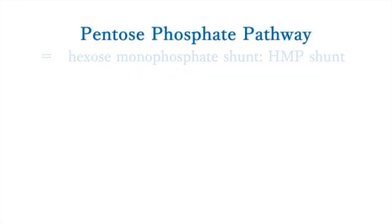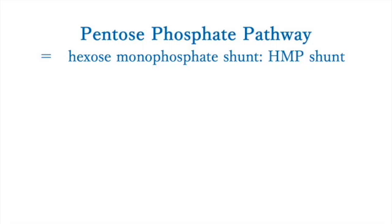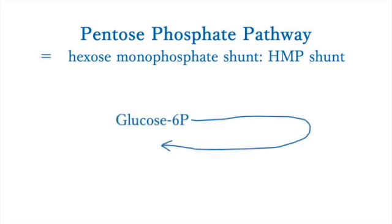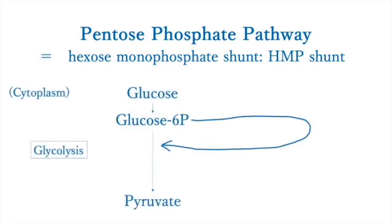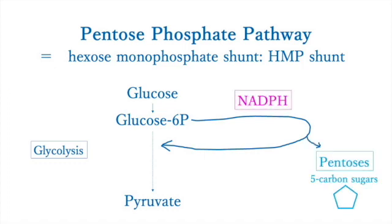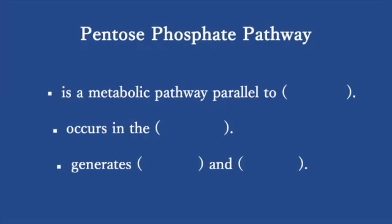The pentose phosphate pathway is also called the Hexose Monophosphate Shunt. It is a metabolic pathway parallel to glycolysis. The pentose phosphate pathway occurs exclusively in the cytoplasm. It generates NADPH and 5-carbon sugars called pentoses.